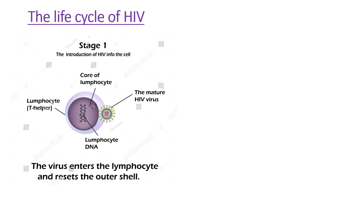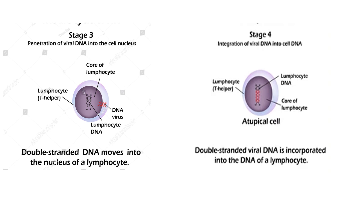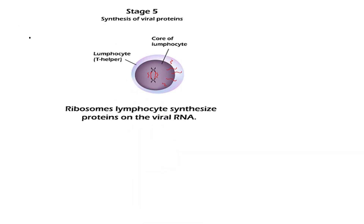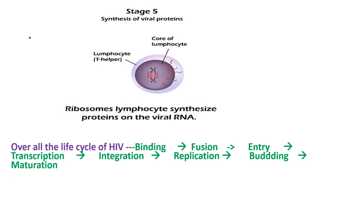In the life cycle of HIV, the first stage is the introduction of HIV into the cell, and the second is reverse transcription — where viral RNA is used to synthesize a DNA copy, which then becomes a double-stranded DNA. The third is penetration of viral DNA into the cell nucleus, and the fourth is integration of viral DNA into the cell's DNA. The fifth is synthesis of viral proteins. Overall, the life cycle steps are: binding, fusion, entry, transcription, integration, replication, and maturation.